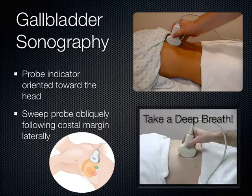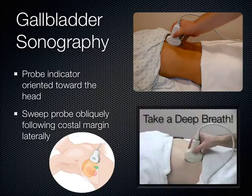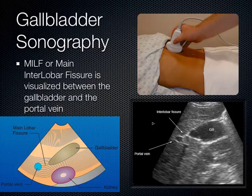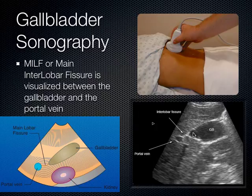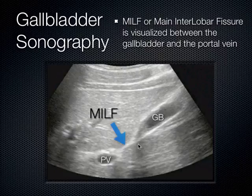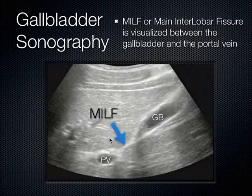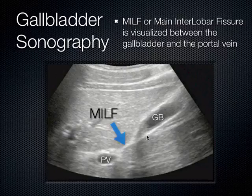Where the right and left lobes of the liver come together is called the main interlobar fissure — the fossa the gallbladder sits in. We can see the main interlobar fissure between the portal vein and the neck of the gallbladder. About 75% of patients have a very prominent main interlobar fissure connecting the portal vein up to the neck of the gallbladder. You'll see stones throughout the gallbladder — sometimes in the neck, sometimes in the fundus or body — depending on how the patient has been positioned, because gallstones roll around.